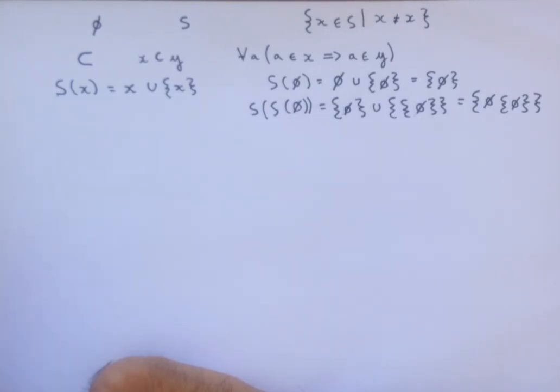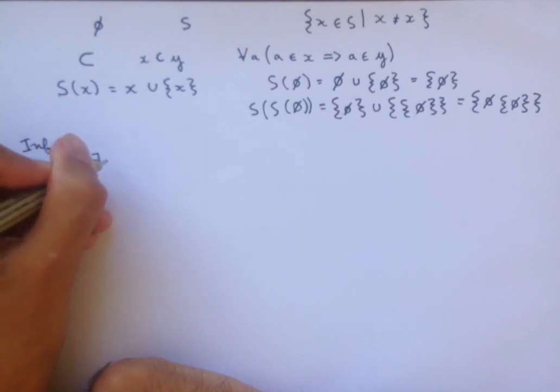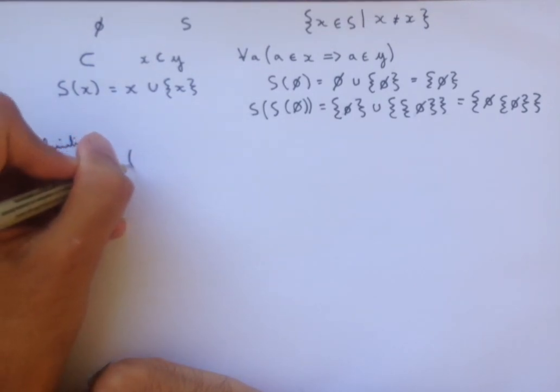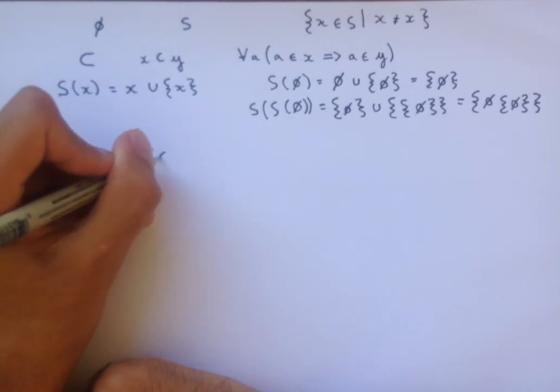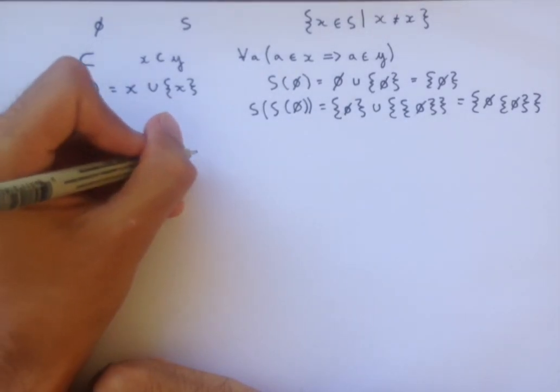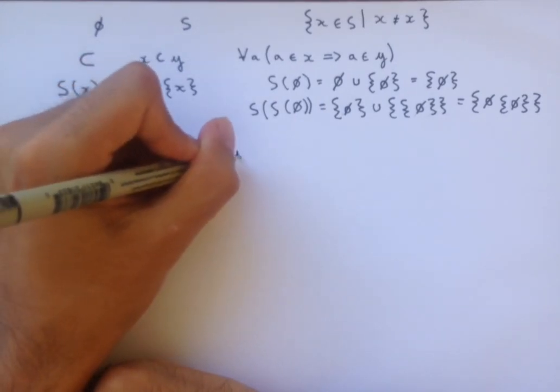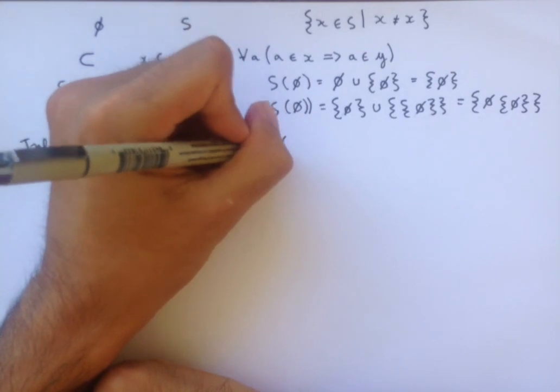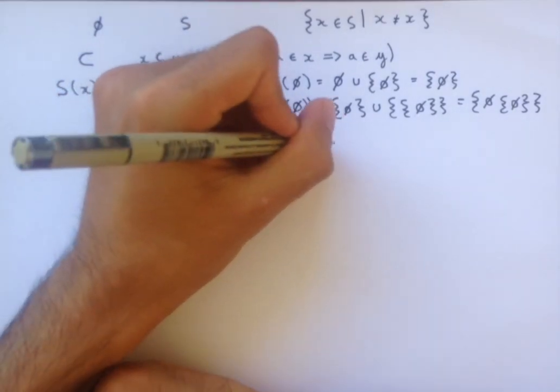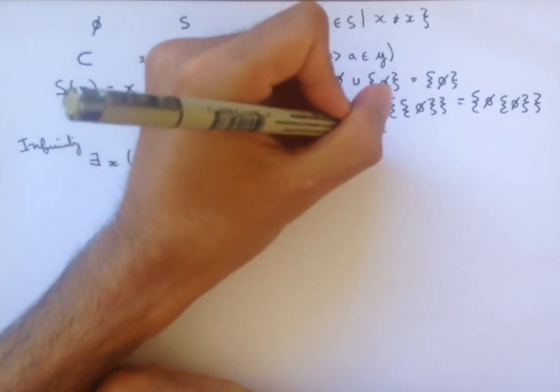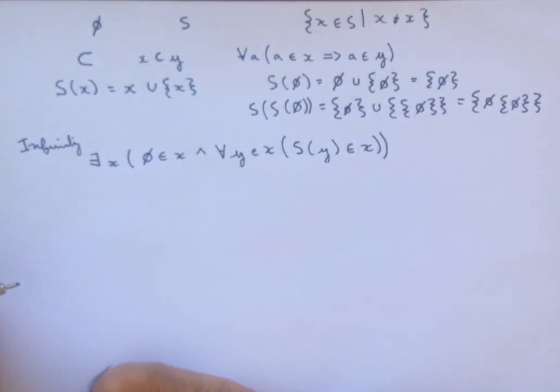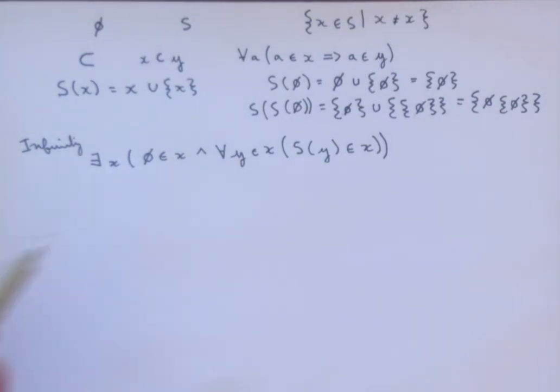So, now we can get to the last three axioms to discuss. The first is the axiom of infinity, which says that there exists X such that the empty set is in X, and for all Y in X, S of Y is in X. So, this is a set which has infinitely many elements. First, it has the empty set,